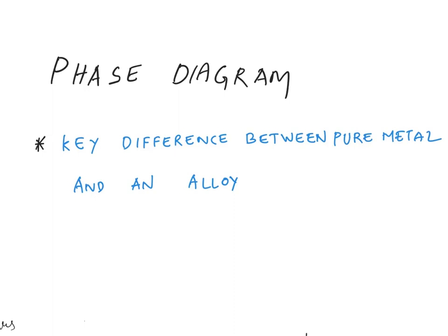Hi viewers, in the previous lecture we looked at what we really mean by the word phase. We examined an example where a particular alloy had two phases, specifically a lead and copper alloy. Moving ahead, before we start with the formal definition of a phase diagram, I'd like to drive home the key difference we'll see in alloys compared to pure metals.